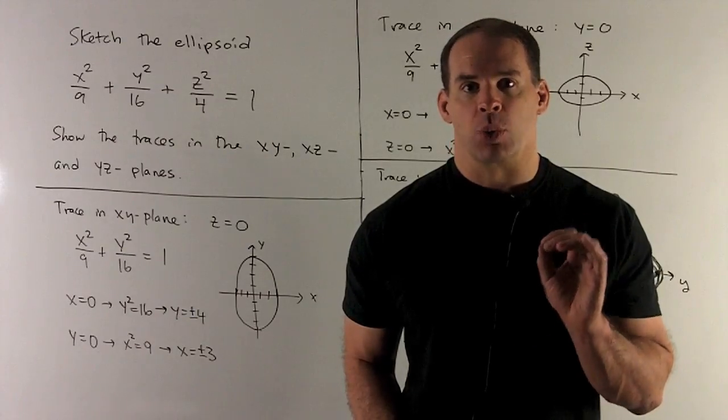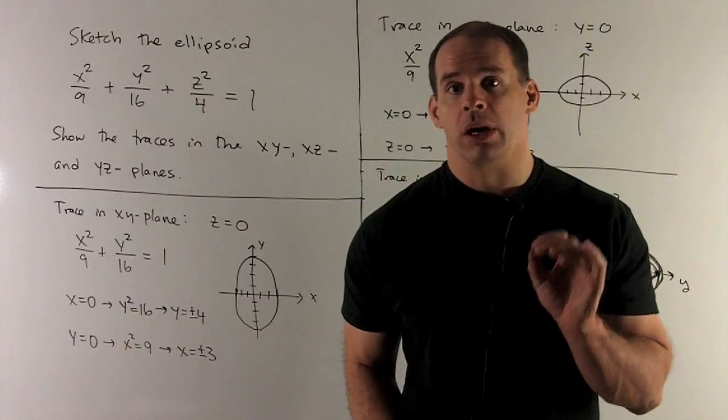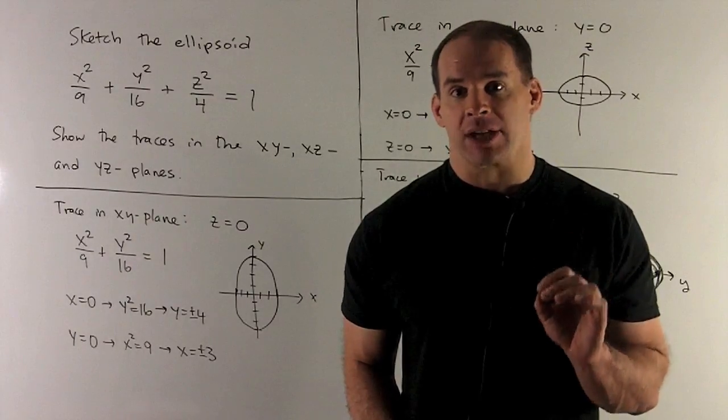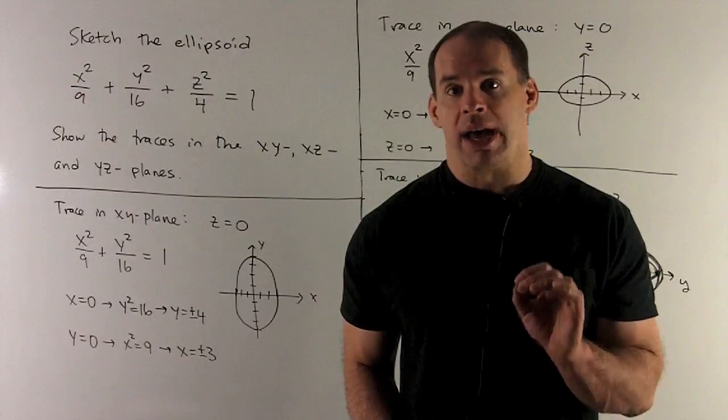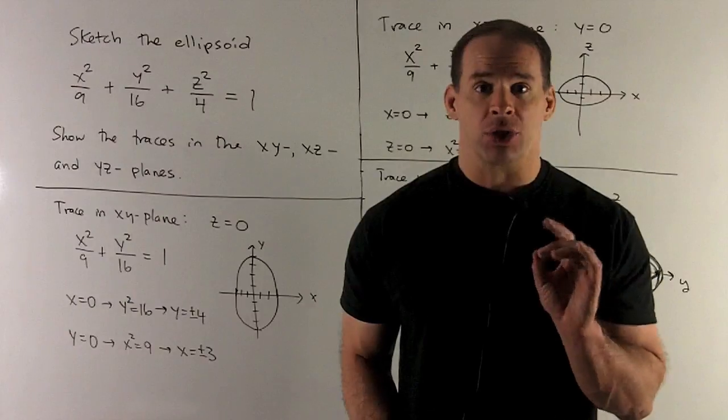Sketch the ellipsoid x²/9 + y²/16 + z²/4 = 1. Show the traces in the xy, xz, and yz planes. The first thing I'm going to do is find the traces.